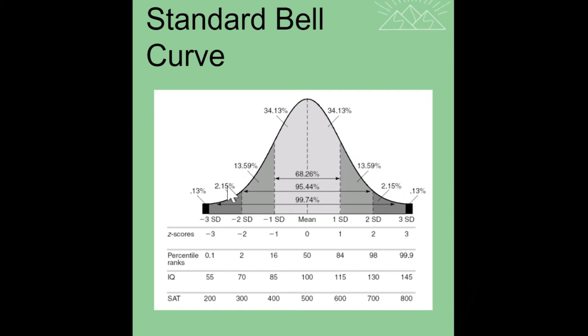If someone scores a 130 on the IQ test, the question might be what percentile do they fall under? And we would see that they are in the 98th percentile. So typically on the questions that you'll be asked, standard deviation, average score, and then either the percentile, the z-score or the individual score will be given to you.